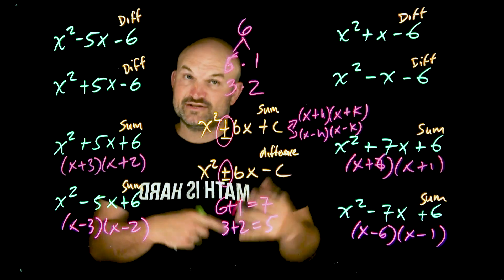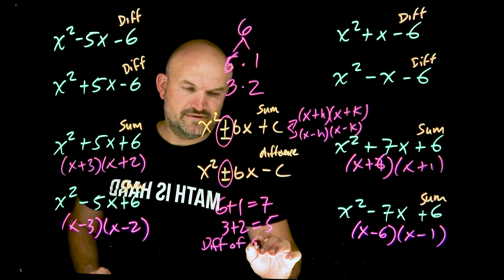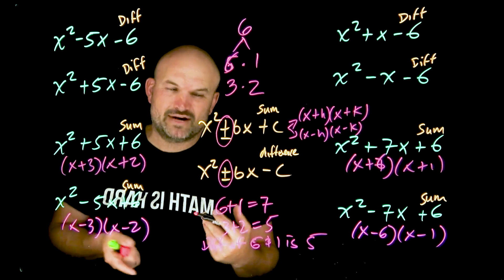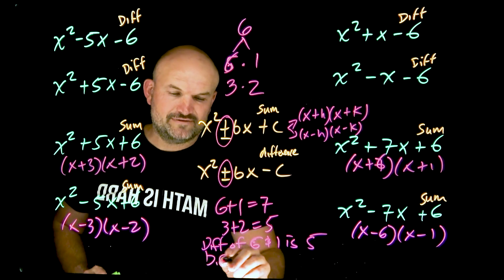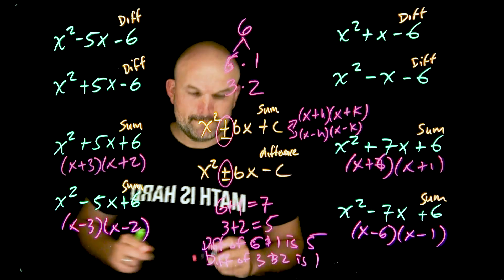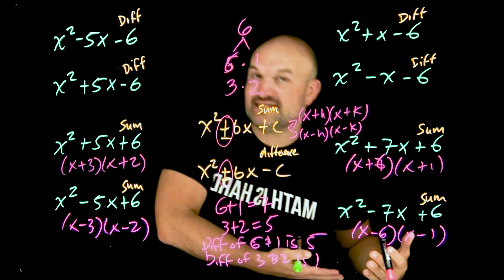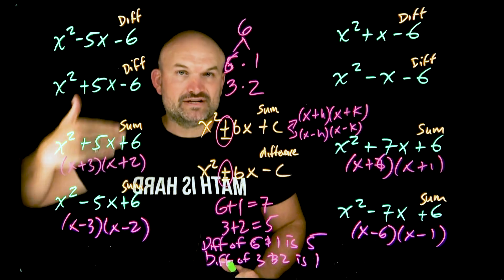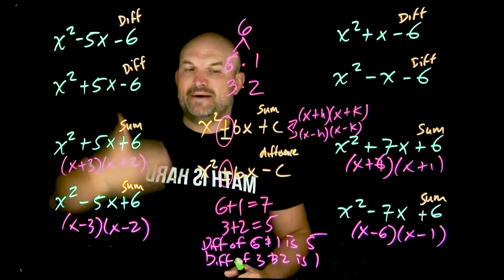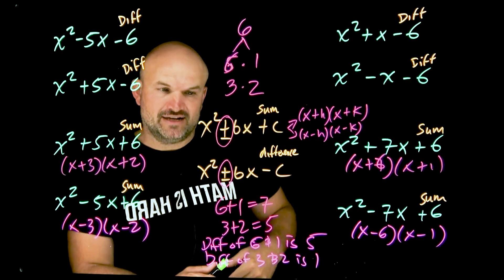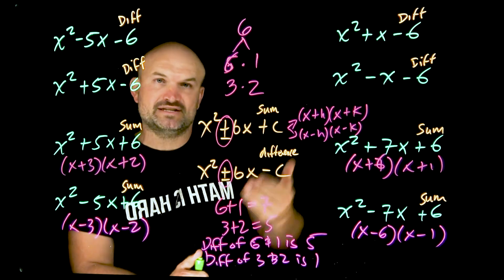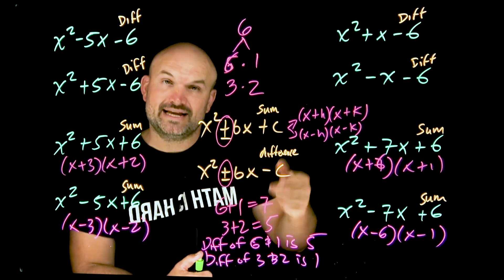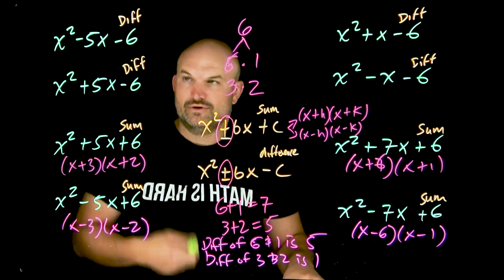Rather than adding, you look at which factor pairs have a certain difference. The difference of six and one is five, and the difference of three and two is one. How do you know if the difference is positive or negative? It's all about the middle term. If the middle term is positive, you have a positive difference, meaning the larger of your two factors has to be positive. If the middle term is negative, you have a negative difference, meaning the larger of your two factors has to be negative.